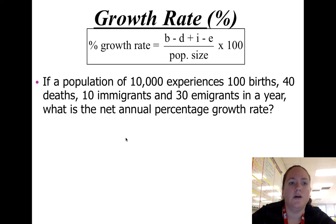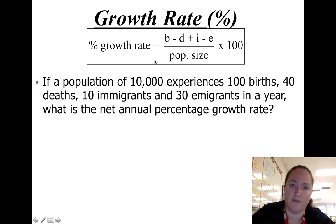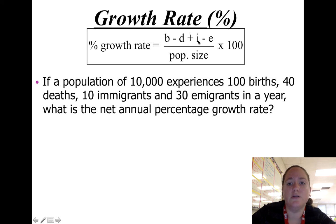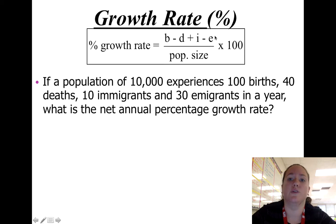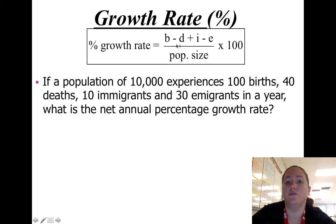Looking at growth rate, you need to know and memorize this formula — you will not get a formula sheet on the AP exam. Percent growth rate equals births minus deaths, plus immigration (people coming in), minus emigration (people leaving). The numerator — births minus deaths plus immigration minus emigration — is your population change. Divide that by the initial population size and multiply by 100 to get the growth rate.